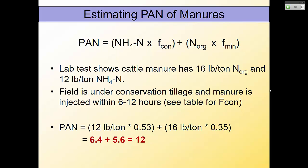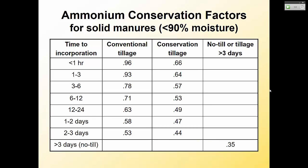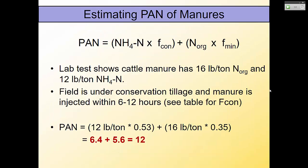For a PAN calculation example: a lab test shows cow manure has 16 pounds per ton of organic nitrogen — that has to be mineralized to be plant-available — and 12 pounds per ton of ammonium, which is an inorganic form immediately available but can become a gas. If conservation tillage with manure injected within 6 to 12 hours, the conservation factor is 0.53 — so 50% of ammonium remains. The organic nitrogen first-year mineralization factor is 0.35. Practice these calculations from the book.